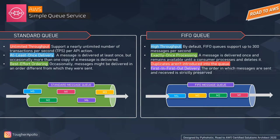Let's look at differences between standard and FIFO queues. The standard queue supports nearly unlimited transactions per second (TPS) per API action, providing unlimited throughput. With at-least-once delivery, a message is delivered at least once, but occasionally more than one copy may be delivered. Also, in standard queues, messages might be delivered in a different order from which they were sent — this is called best-effort ordering.